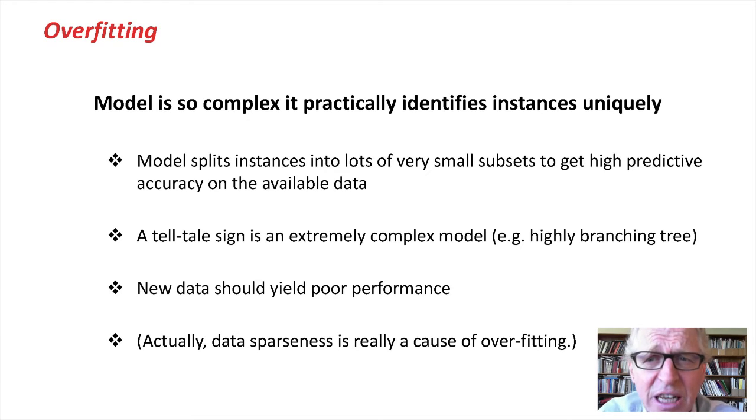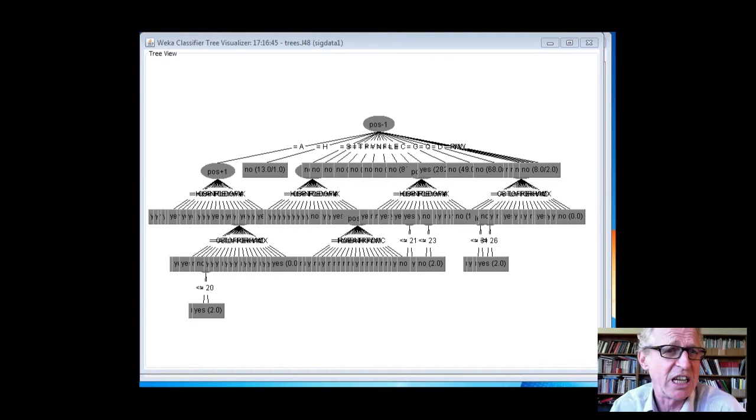Overfitting in general can be indicated when the model is overly complex, such that the tests practically uniquely identify instances. So the model splits instances into lots of very small subsets. And a telltale sign of this is the model is complex, highly branching. And that's what we see from our example here. And we can usually tell if we've been overfitting, if we could just get some more data, if we tried to predict it on the basis of the tree we learned, we'd get poor performance. But of course, we don't often have extra data.